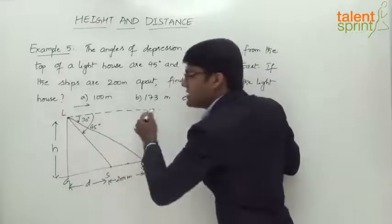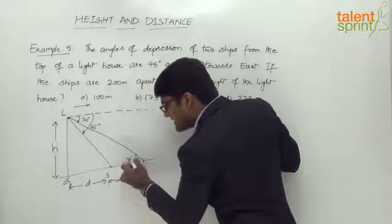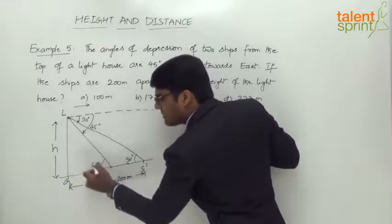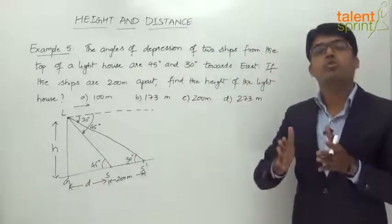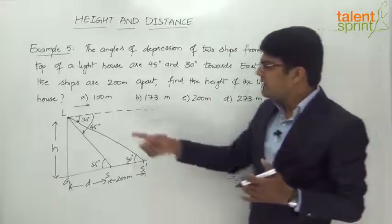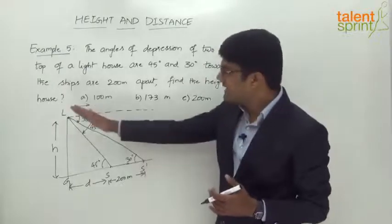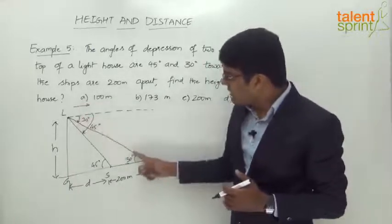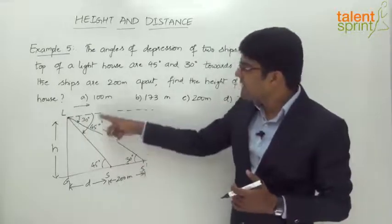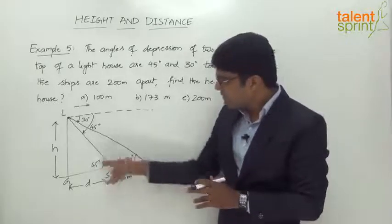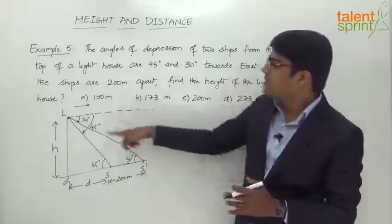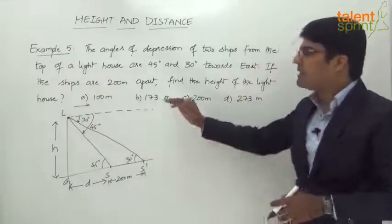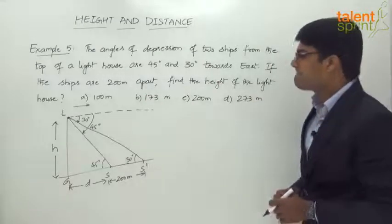One important point: if the angle of depression for S' is 30 degrees, then the angle inside triangle GS'L at S' is also 30 degrees — by alternate angles. When two parallel lines are cut by a transversal, alternate angles are equal. The horizontal at the top and sea level are parallel; the line of sight is the transversal. So the angle of elevation from S is 45 degrees and from S' is 30 degrees, converting the problem from angles of depression to angles of elevation.